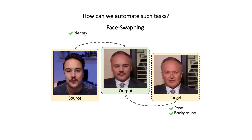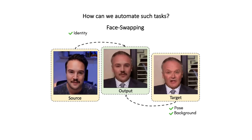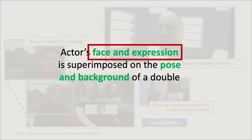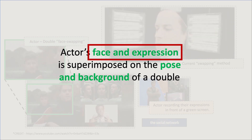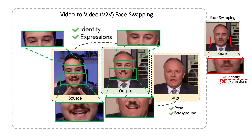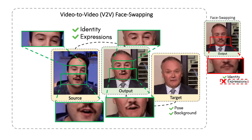One can consider computer vision face swapping techniques as an approach to automate this task. However, one important requirement in actor double face swapping is the transfer of expressions from the source video of the actor to the target video of the double. Thus, one cannot naively use face swapping for the task. To tackle such tasks, we introduce video-to-video face swapping, aka V2V face swapping.